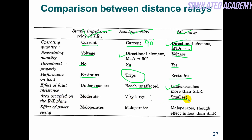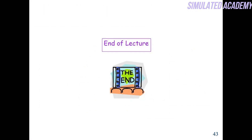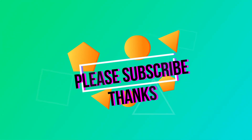Area occupied: the Mho relay occupies the smallest area, the simple impedance relay has a large area since it is a circle, and the reactance relay — being a straight line — covers the most area below it. Effect of power swings: the simple impedance relay is most affected by power swings, the Mho relay and reactance relay also operate on power swings, but the Mho relay is affected least. So that is how you protect your transmission line using different relays. If you haven't subscribed to my channel, please kindly subscribe. Thank you so much.